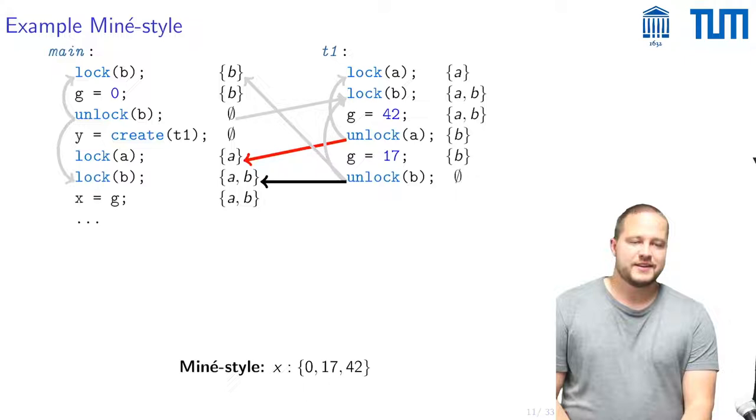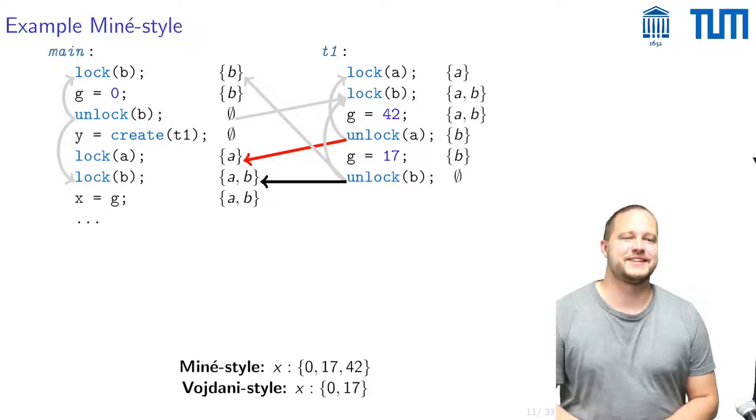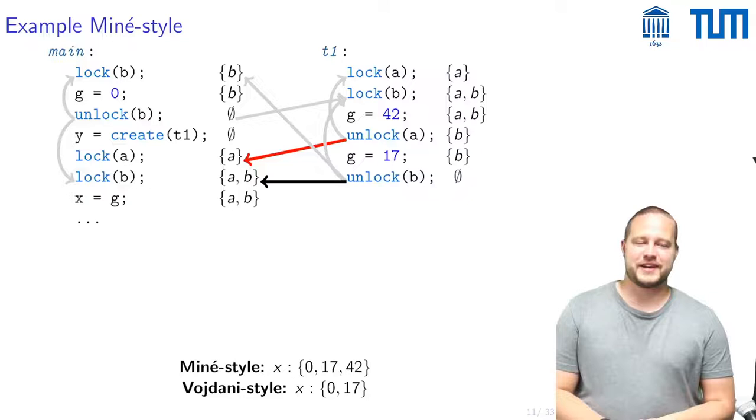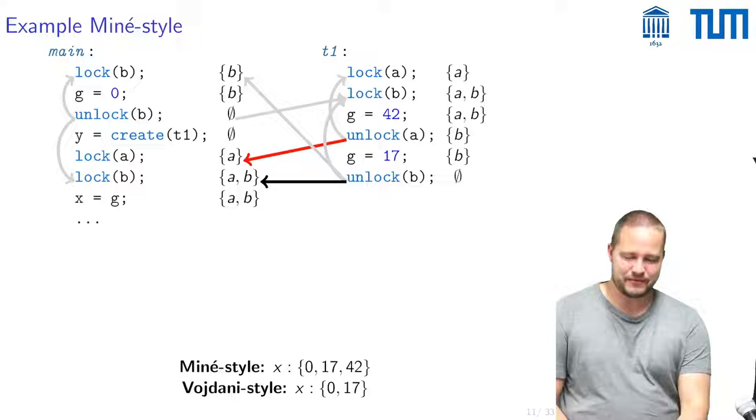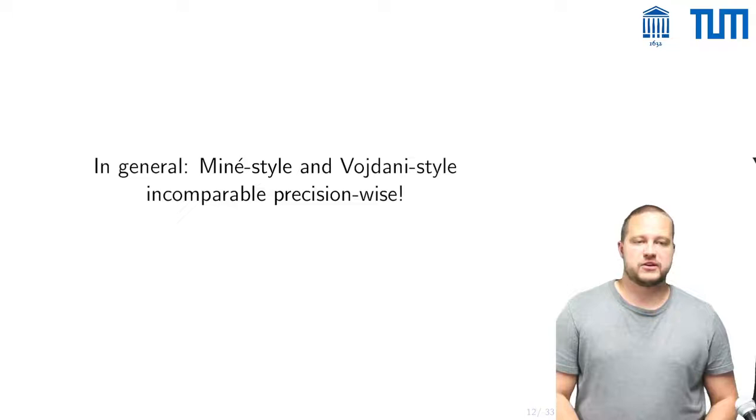So what is quite interesting here is that in this case this Miné style analysis is actually less precise than the Vojdani style of analysis. This is not purely a coincidence but we have in fact sort of maliciously constructed this example to highlight an insight that we had, namely that this Miné style analysis and the Vojdani style of analysis are actually incomparable when it comes to precision.